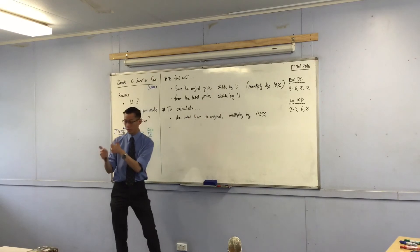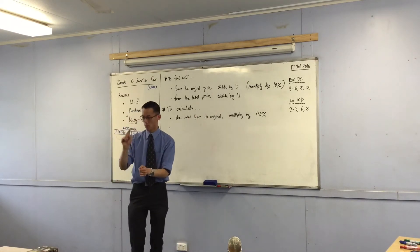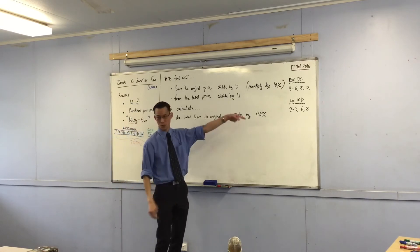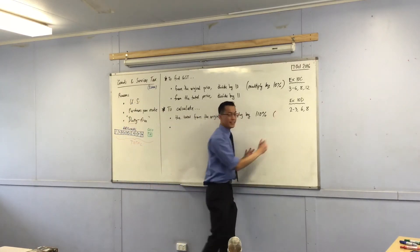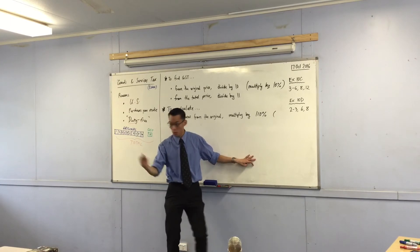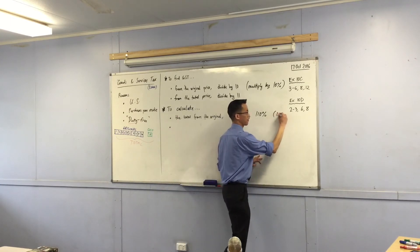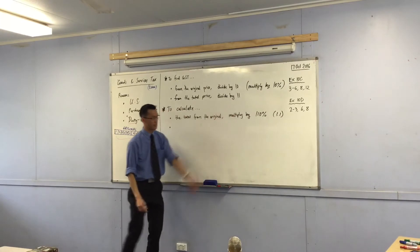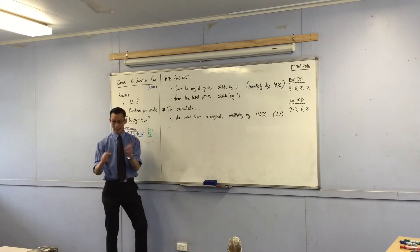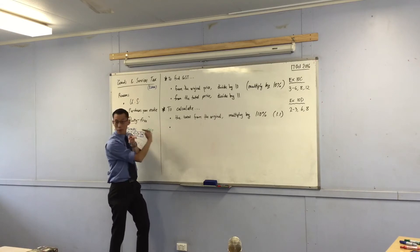So you can just unifly punch into your calculator, times 110%. Alternatively, if you're like, I don't know what to do with the percent button, instead of multiplying by 110%, what's that just as a decimal? It's 1.1, very good. So you can multiply by 110%, multiply by 1.1, same effect. Last one, if I want to reverse things, if I want to calculate the original from the total.